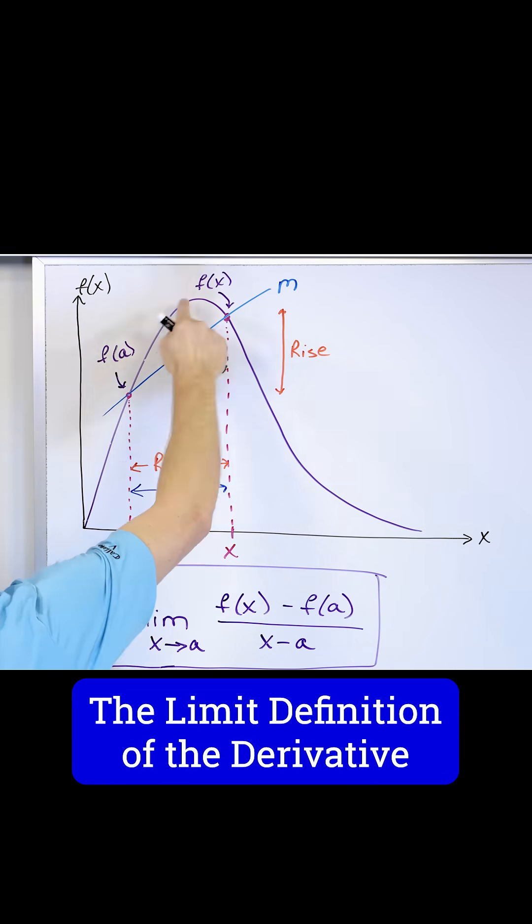All you're doing is if you have a point here on the original purple curve, you want to figure out what the slope of the line tangent is here.